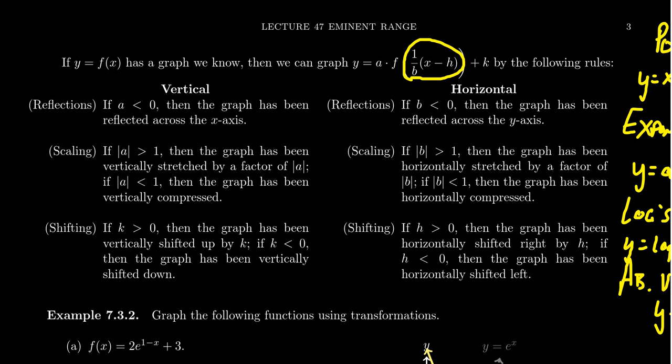Things in the horizontal zone kind of work opposite to what you expect — it's not what you expect, it kind of works backwards. Between the vertical and horizontal transformations, there are three families of transformations we pay attention to. The first family is reflections.